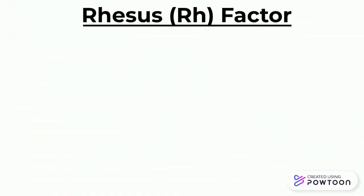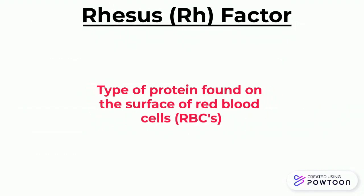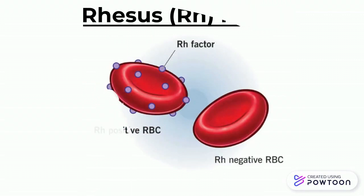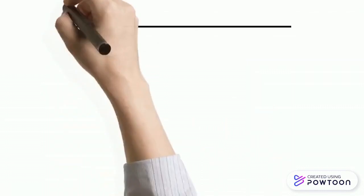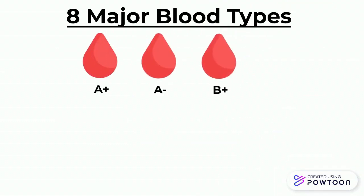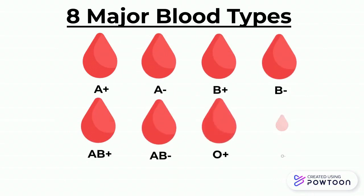The rhesus or RH factor is also a protein found on the surface of red blood cells. If your blood cells have the RH factor, then you're classified as positive, and if they don't, then you're classified as negative. Therefore, there are a total of eight major blood types a person can be, including A positive, A negative, B positive, B negative, AB positive, AB negative, or O positive and O negative.